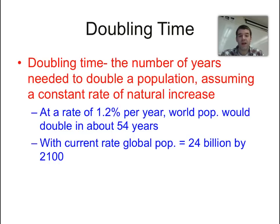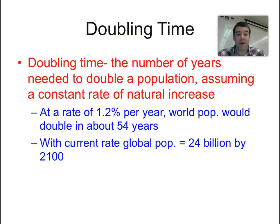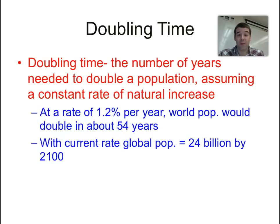In other words, if we take a natural increase rate of 1.2 — the current world average — and take 72 divided by 1.2, the doubling time of the world population is about 54 years. In other words, in about what would be 2068, we're going to see a world population of about 14 billion.